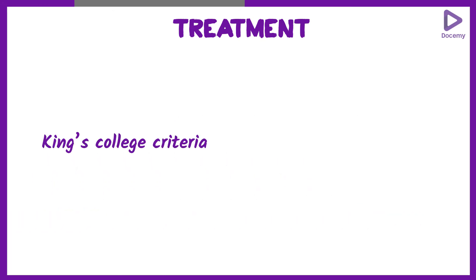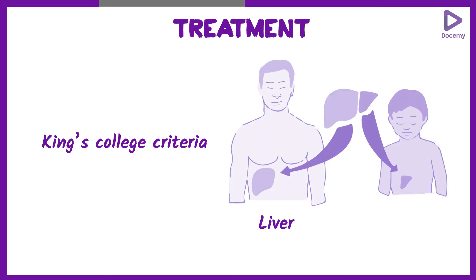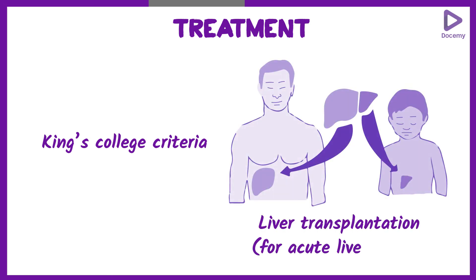The King's College Criteria is a criteria which is used for liver transplantation once the child has gone into acute liver failure.